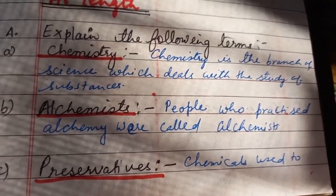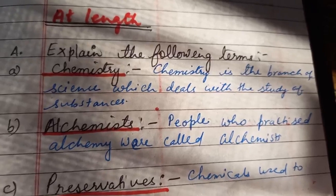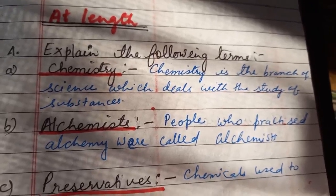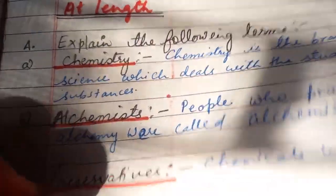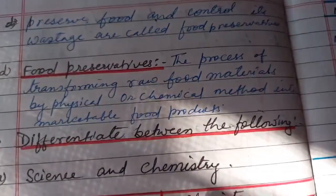Third one preservatives. We have already defined food preservatives. Same definitions you can write: the chemicals used to preserve food and control its wastages are called food preservatives.